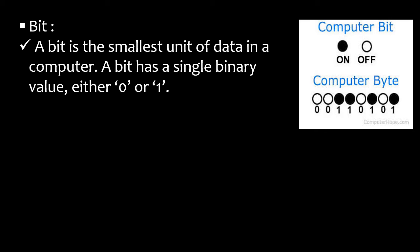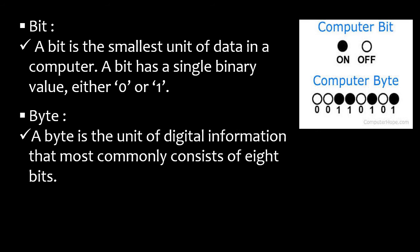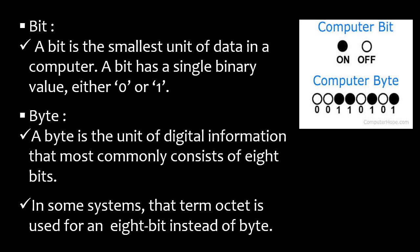A bit is the smallest unit of data in a computer. A bit has a single binary value — either zero or one. A byte is the unit of digital information that most commonly consists of eight bits. In some systems, the term 'octet' is used for an 8-bit unit instead of a byte. The diagram on the right shows colored circles representing 'on' (which means 1) and normal circles representing 'off' (which means 0).